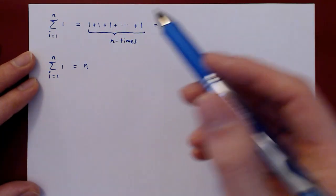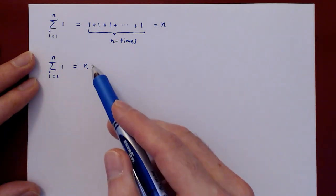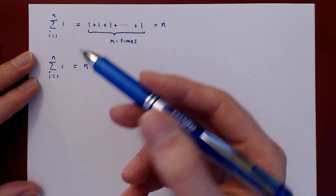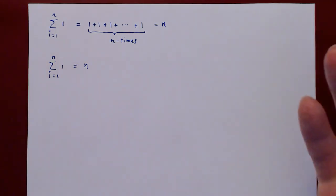And again, granted this is a trivial summation formula, right? It says add 1 n times, of course the result is n. But we have to start somewhere.